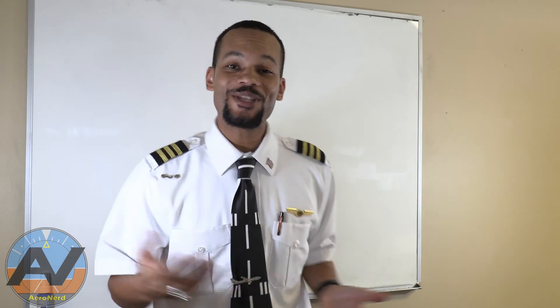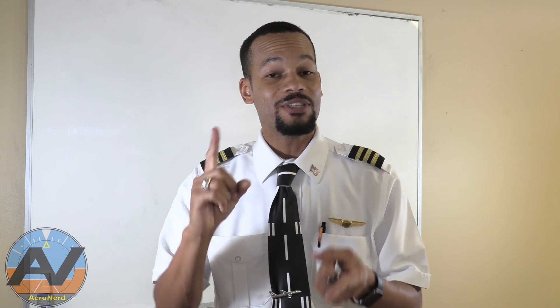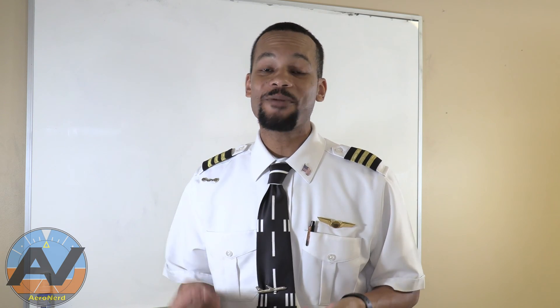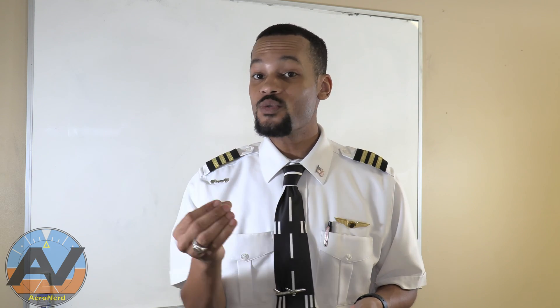Hey aviators, in this one we're going to be talking about the compass errors. You may remember the acronym of DVMONA. So D for deviation, V for variation, M for magnetic dip, O for oscillation, N for UNOS, and A for ANDS.